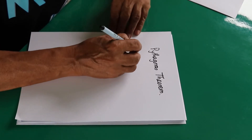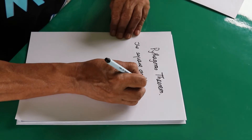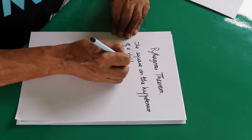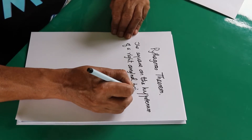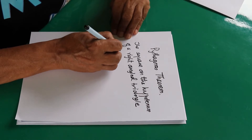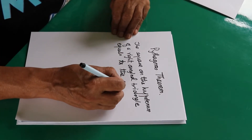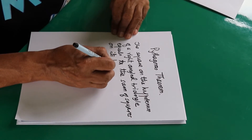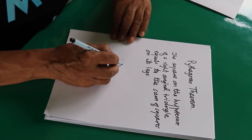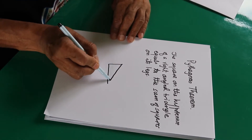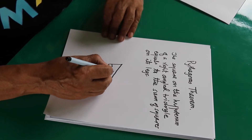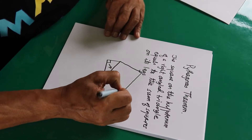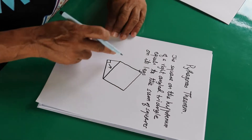Today we are discussing Pythagoras Theorem. The theorem states that the square on the hypotenuse of a right angle triangle equals the sum of squares on its legs. We have the right angle triangle here, and with reference to this right angle, the side opposite to it is the hypotenuse. The square on the hypotenuse equals the sum of squares on the legs — the other two sides.